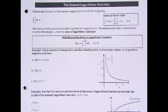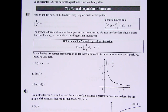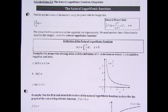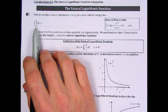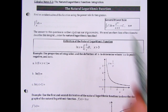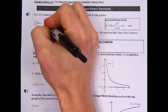We're going to take a closer look at the natural logarithmic function. Last time we learned about the derivative, and now we're going to look at integration. For our first example, it says find an antiderivative of the function using the power rule for integration. We have the integral of 1 over x dx. To use the power rule, we need to rewrite 1 over x as x to the negative 1.